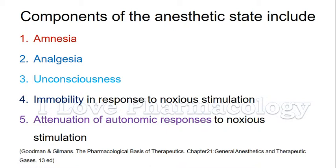So what are the components of anaesthetic state? It includes amnesia — loss of memory; analgesia — loss of pain sensation; unconsciousness; immobility in response to noxious stimulation; and attenuation of autonomic responses to noxious stimulation. So these are the five components of anaesthetic state.